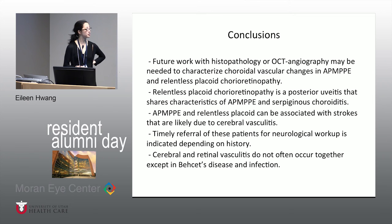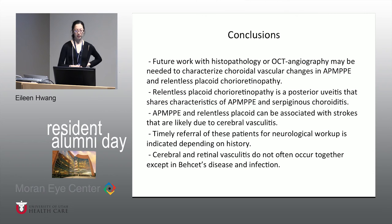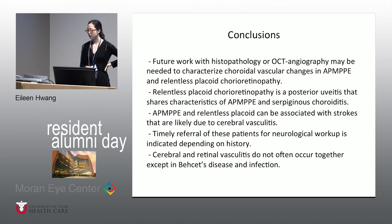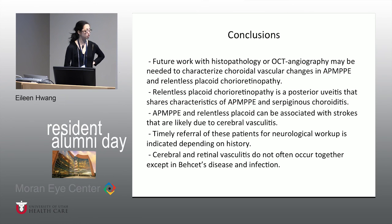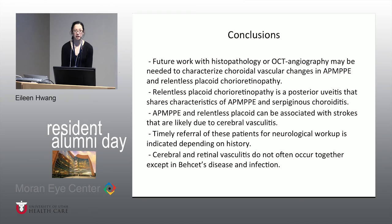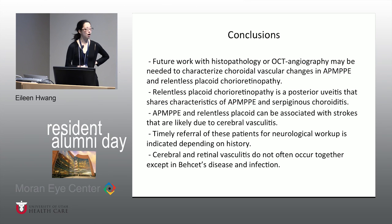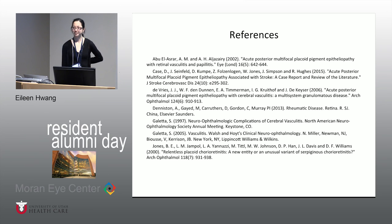In summary, relentless placoid is a posterior uveitis that shares characteristics with both AMPI and serpiginous. Both AMPI and relentless placoid can be associated with strokes likely due to cerebral vasculitis — something we as ophthalmologists don't want to miss because it's treatable. We should refer these patients for neurological workup and treatment as indicated. It's also interesting that cerebral and retinal vasculitis don't often occur together except in the case of Behçet's disease and some viral infections.